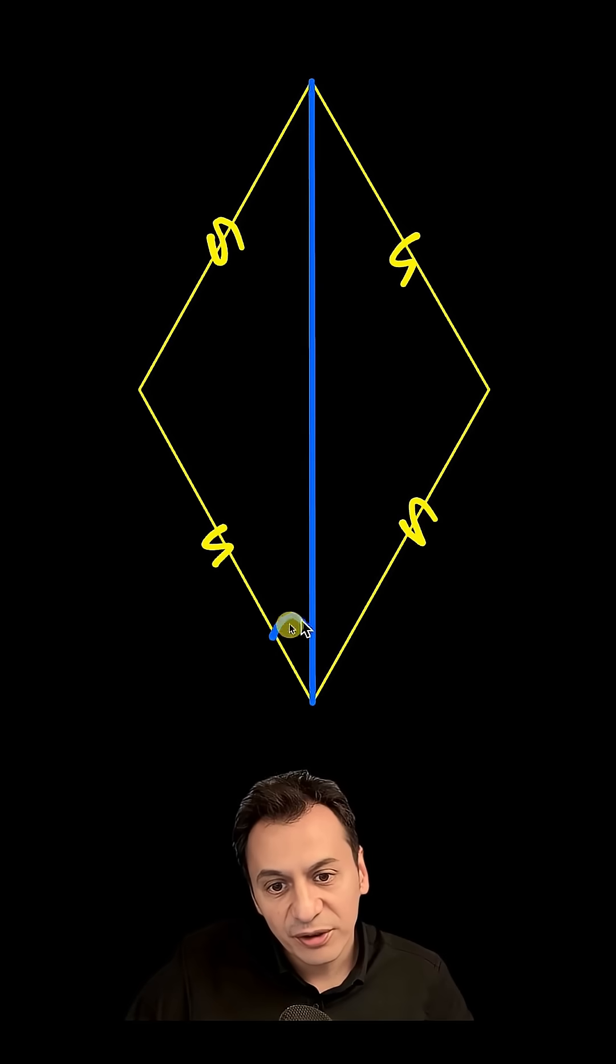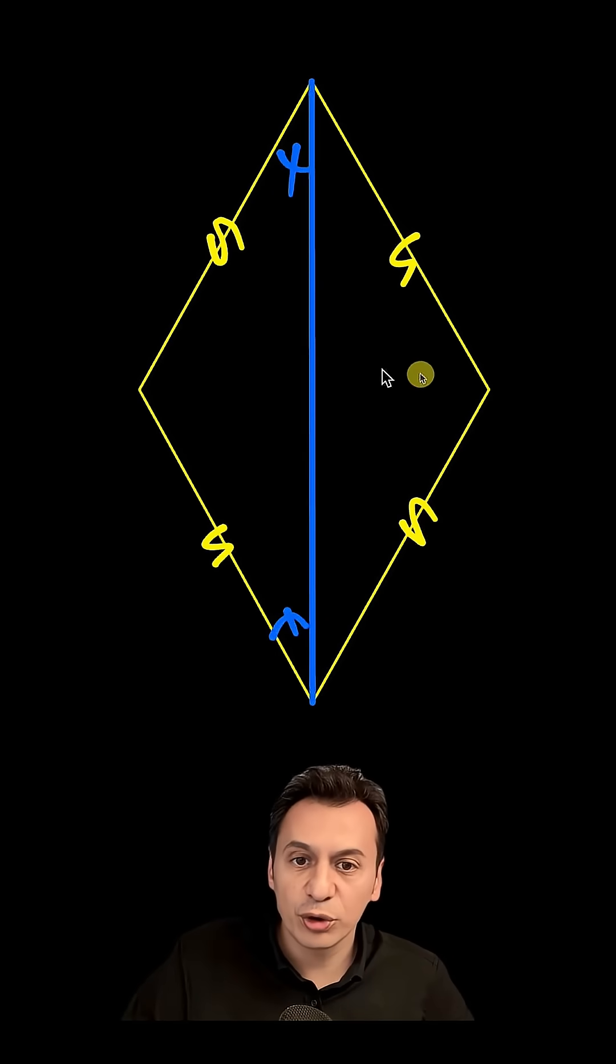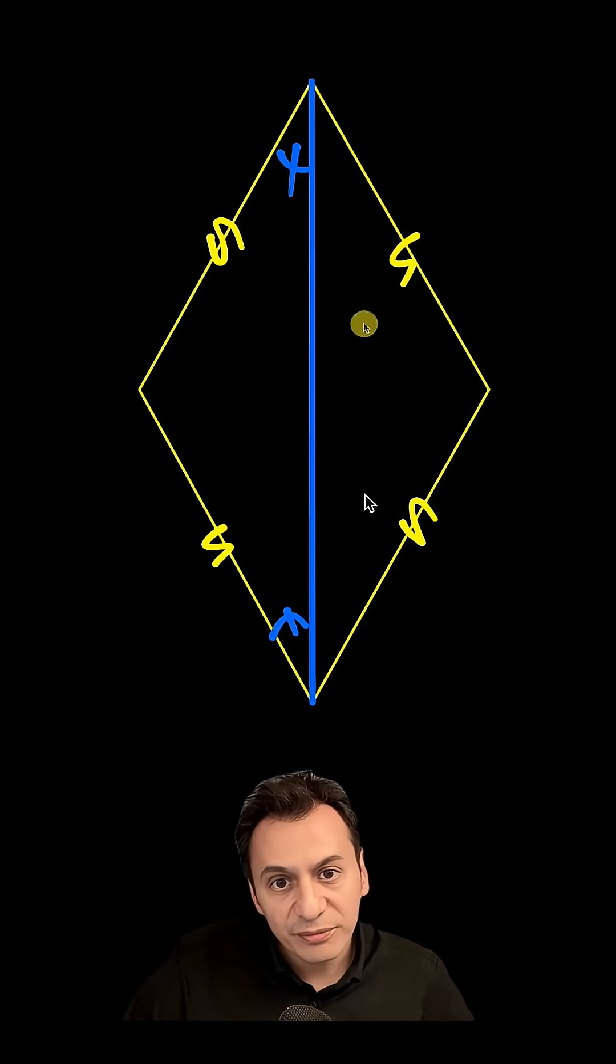In an isosceles triangle, the base angles are equal, and since these are congruent triangles, the angles of this one must also be equal to the angles of that one.